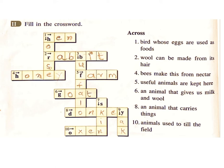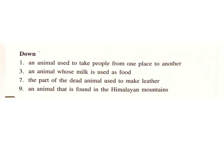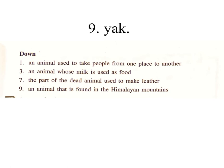Crossword continued — Across: 6: An animal that gives us milk and wool. Answer: Goat. 8: An animal that carries things. Answer: Donkey. 10: Animals used to till the field. Answer: Oxen. Down: 1: An animal used to take people from one place to another. Answer: Horse. 3: An animal whose milk is used as food. Answer: Buffalo. 7: The part of a dead animal used to make leather. Answer: Skin.